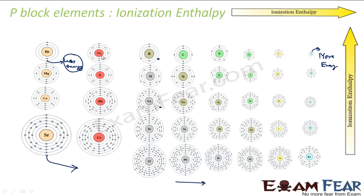So the moment you go across a period, the size decreases and the ionization enthalpy increases — more energy is required to pluck the electron. If you go down a group, the size of the atom increases, the control of the nucleus over the electrons decreases, and thus it is easy to pick the electron, so ionization enthalpy decreases.